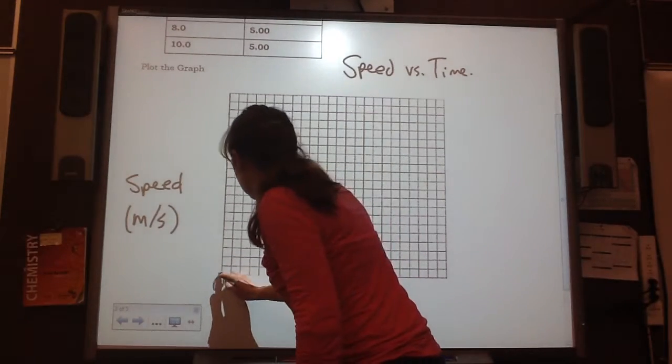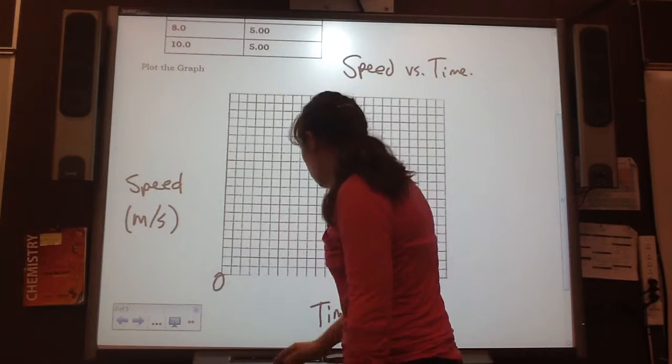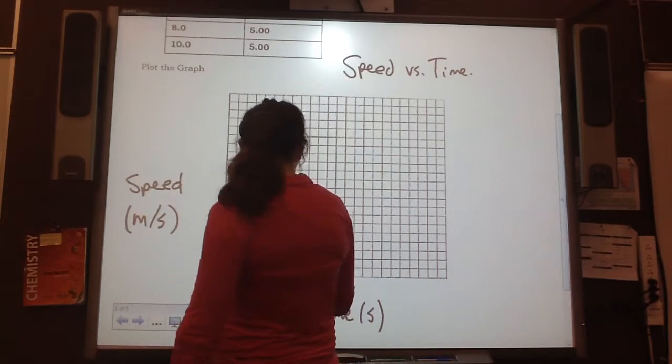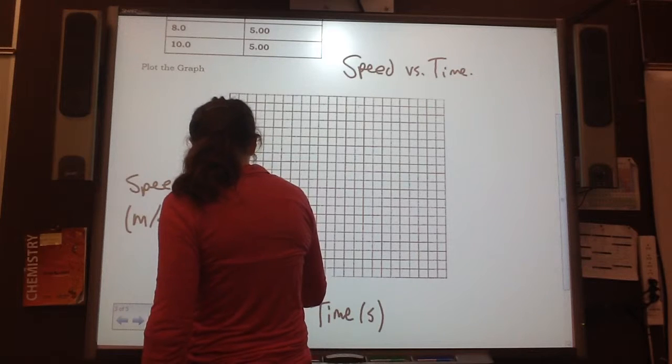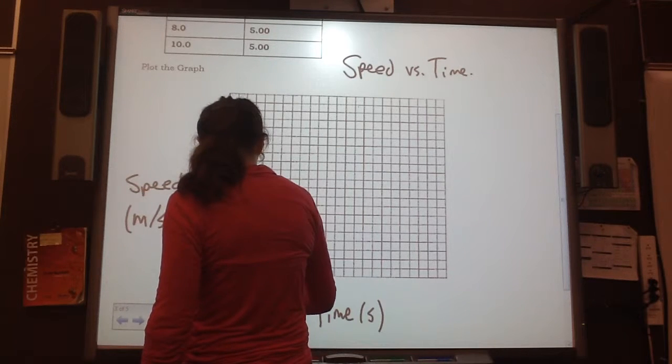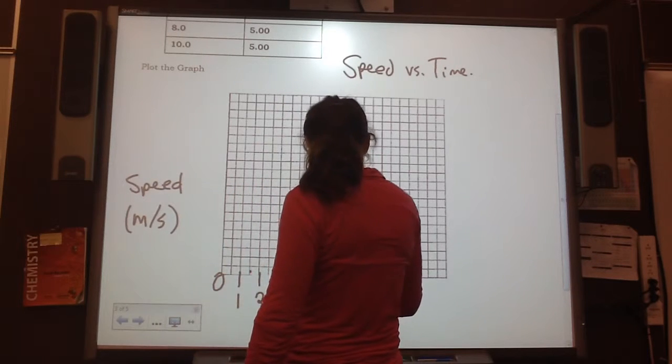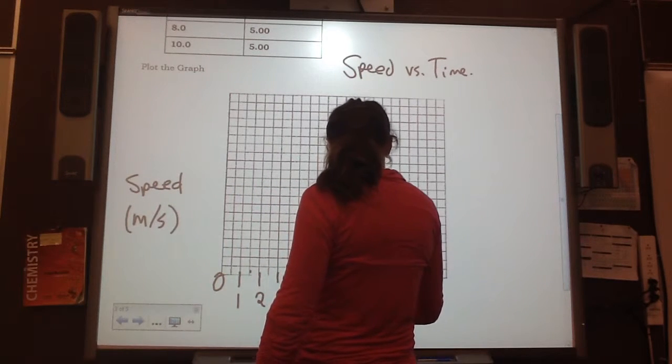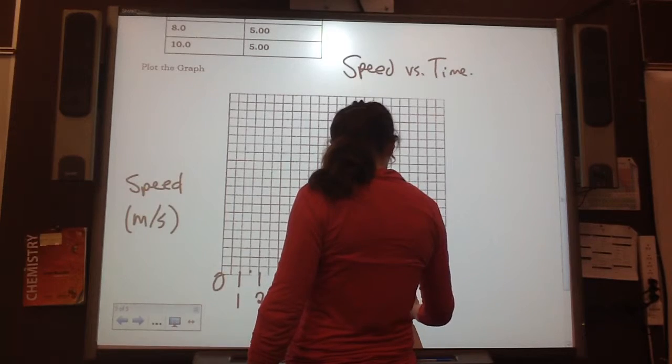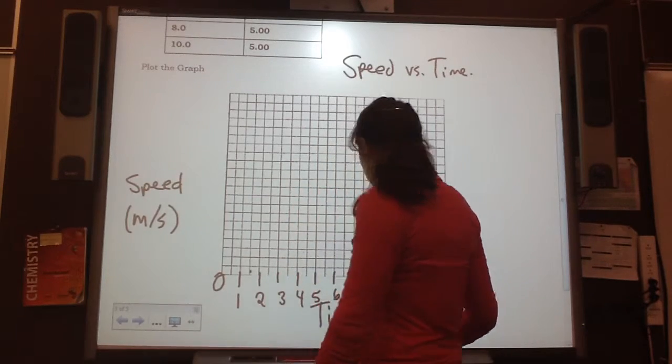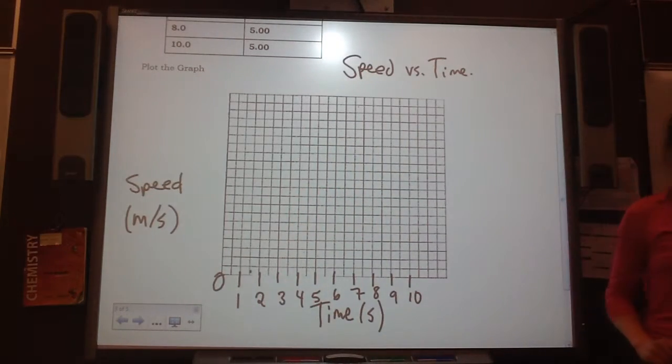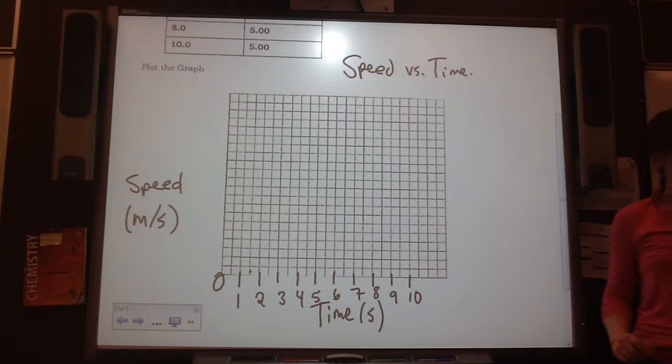Okay, so let's put our zero here. Now, time, we have to go up to 10. So I'm going to go, like, say, two spots, number one. Two spots, number two. Two spots, number three. Four, five, six, seven, eight, nine. Oh, that worked out quite nicely. Two blocks per one increment.